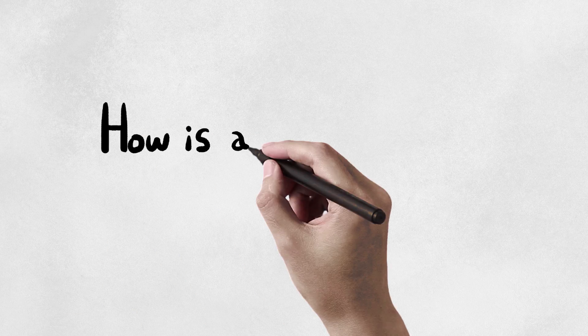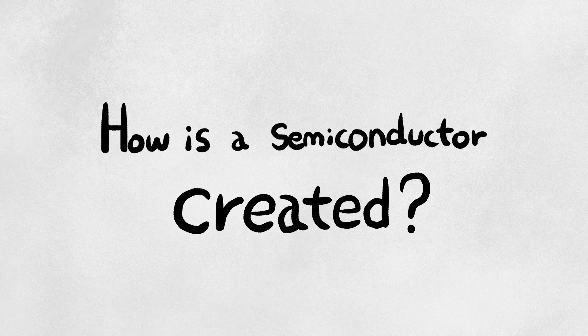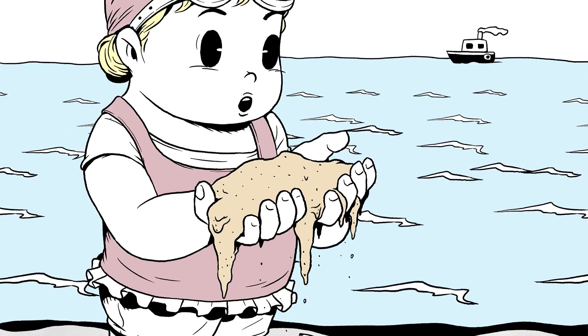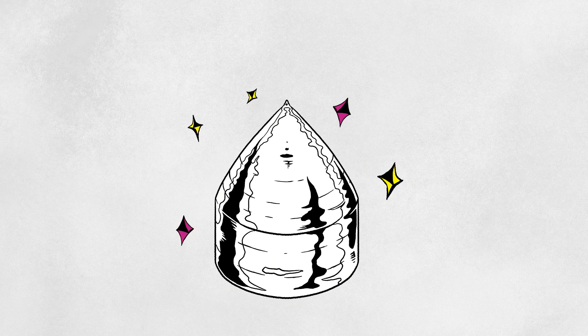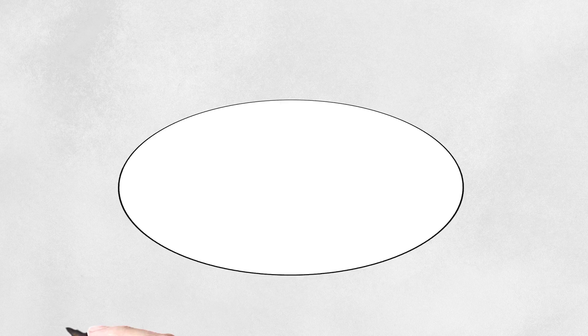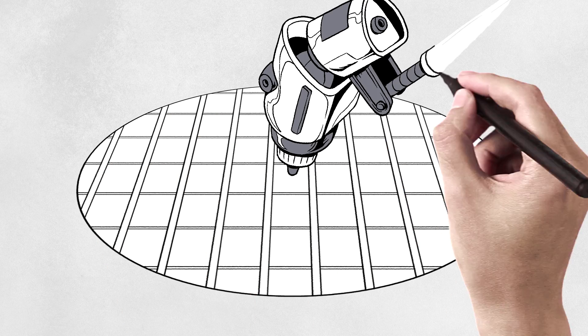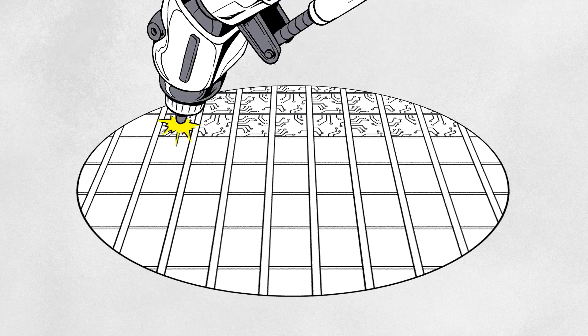Then, how is a semiconductor created? The starting point is an element called silicon, which can easily be found in sand. We use silicon to make thin, round wafers, and then build tiny intricate circuits on it over the course of hundreds of processes.